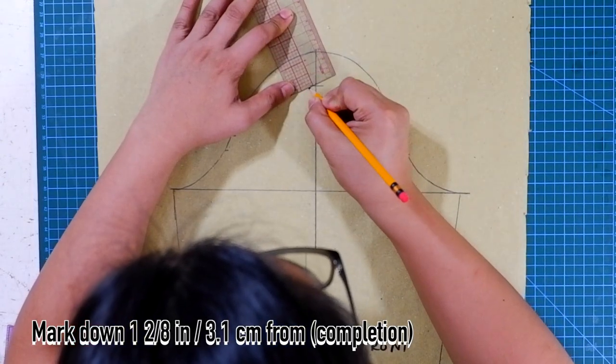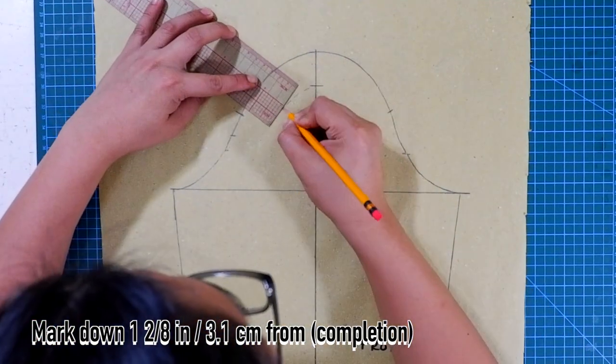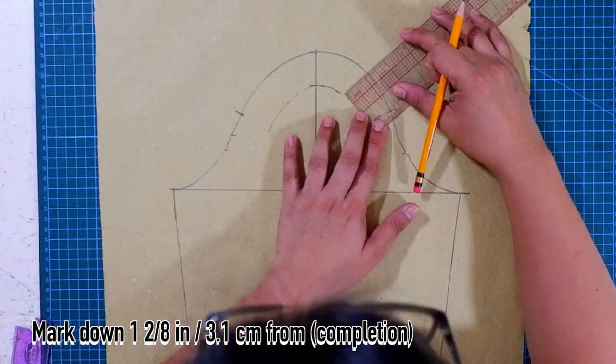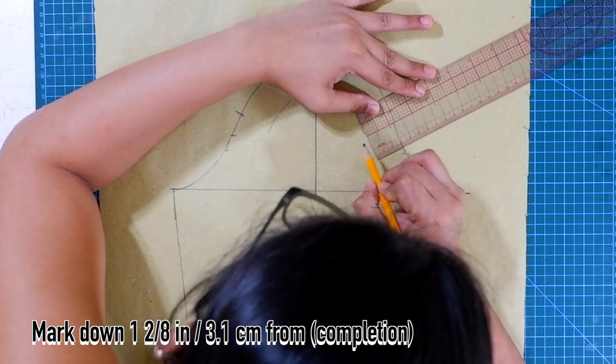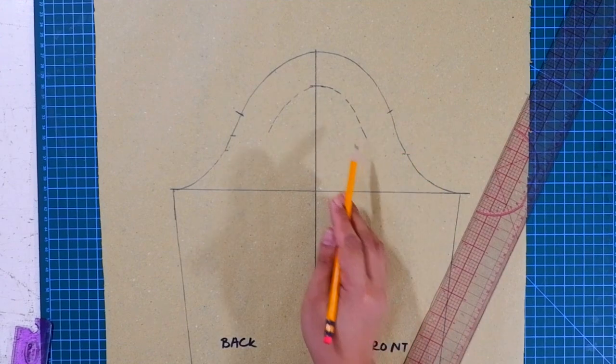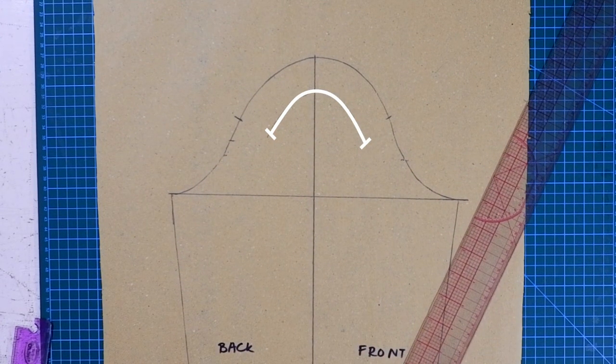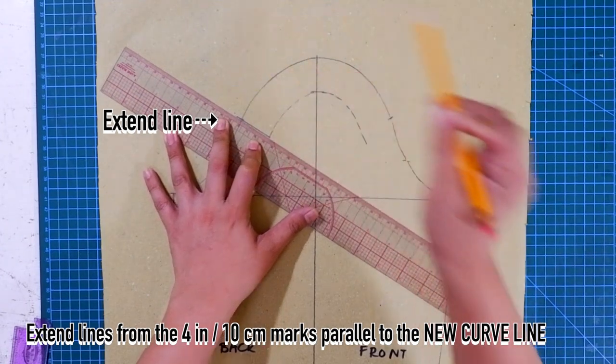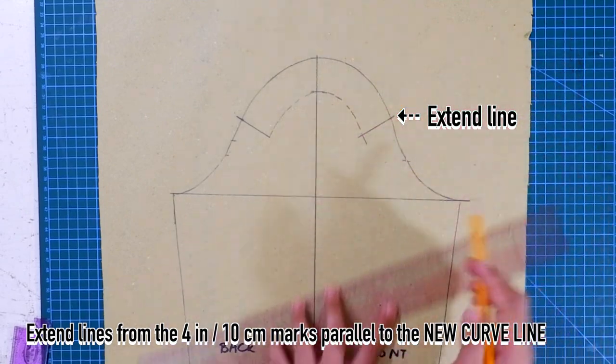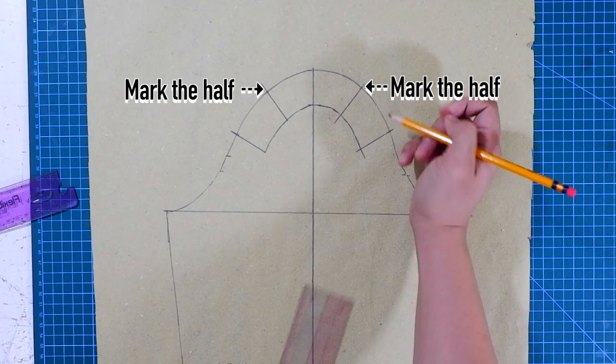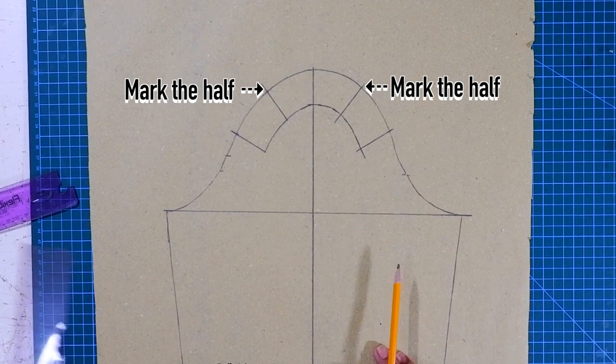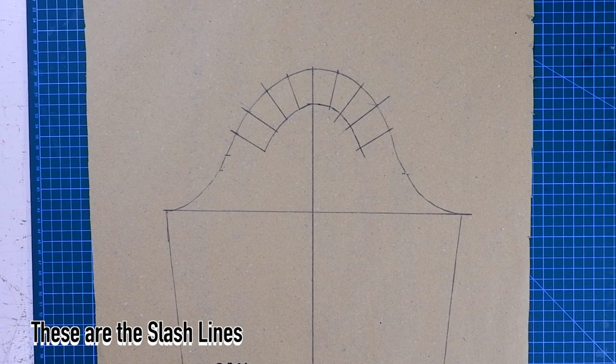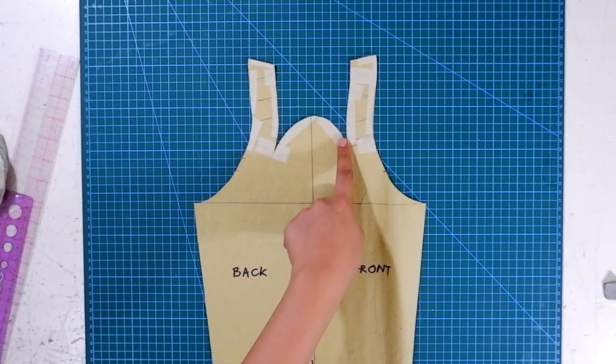Now let's continue on marking down 1 4/8 inches or 3.1 centimeters from the cap. And as you guys can see, we have a new curve line from the cap of the sleeve. Next, mark the half of the 4 inches or 10 centimeters and mark again the half. These lines represent the slash lines. This curved line right here will turn into a panel as we go along.